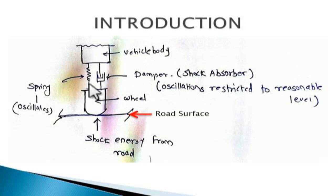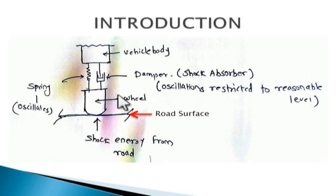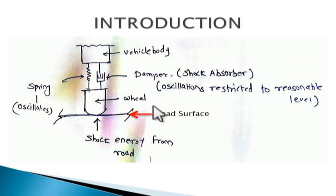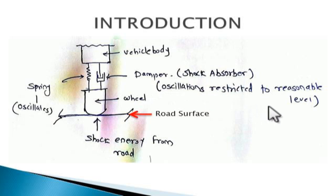As seen in this figure, this particular Suspension System includes a spring as well as a damper. It absorbs the shock energy coming from the road surface and isolates the vehicle body from oscillations and vibration. The spring oscillates with respect to vibration from the shock energy, and the damper — the shock absorber — restricts the oscillation of the spring to a reasonable level.